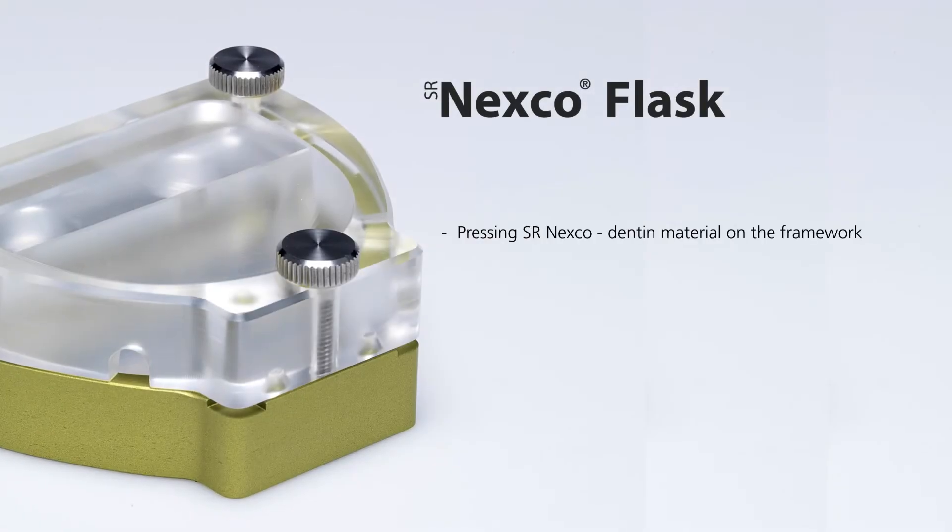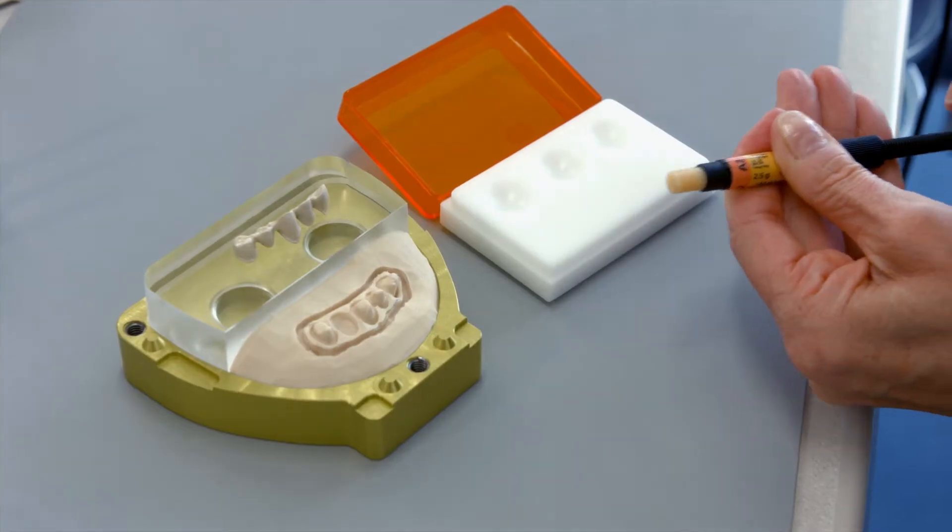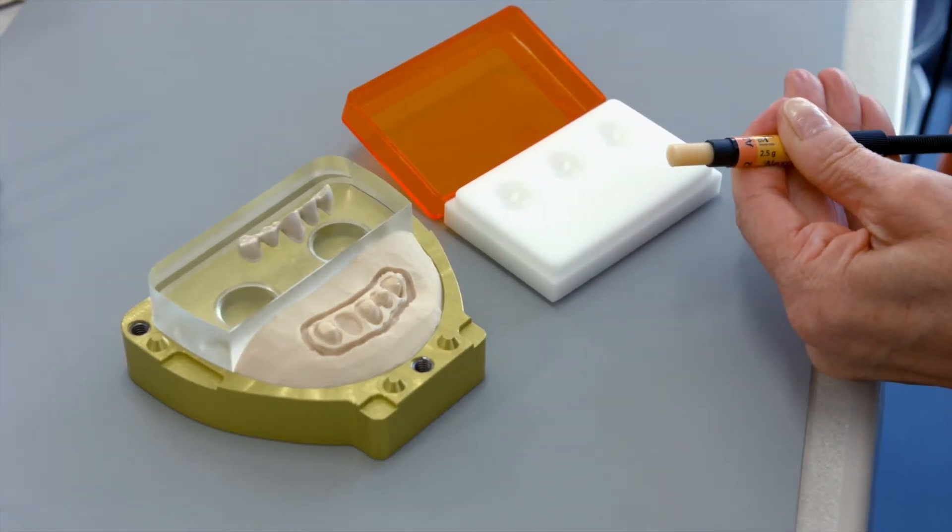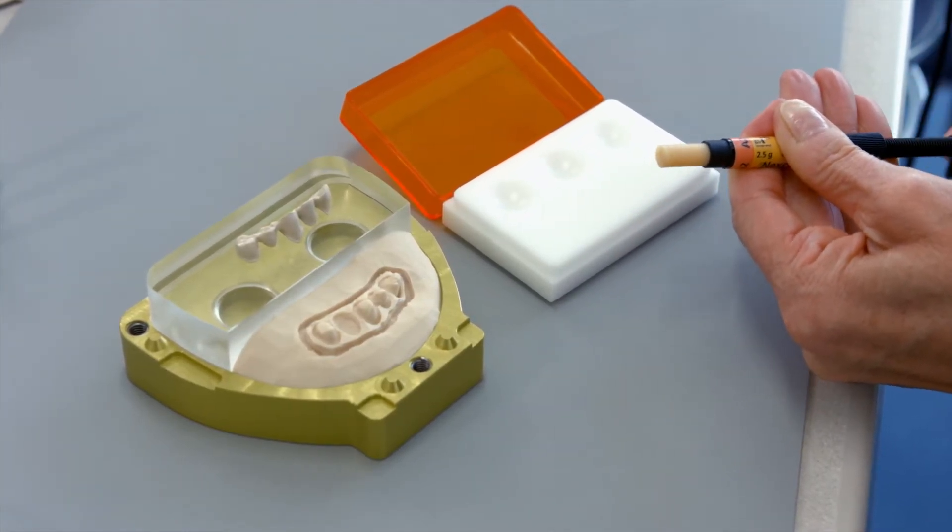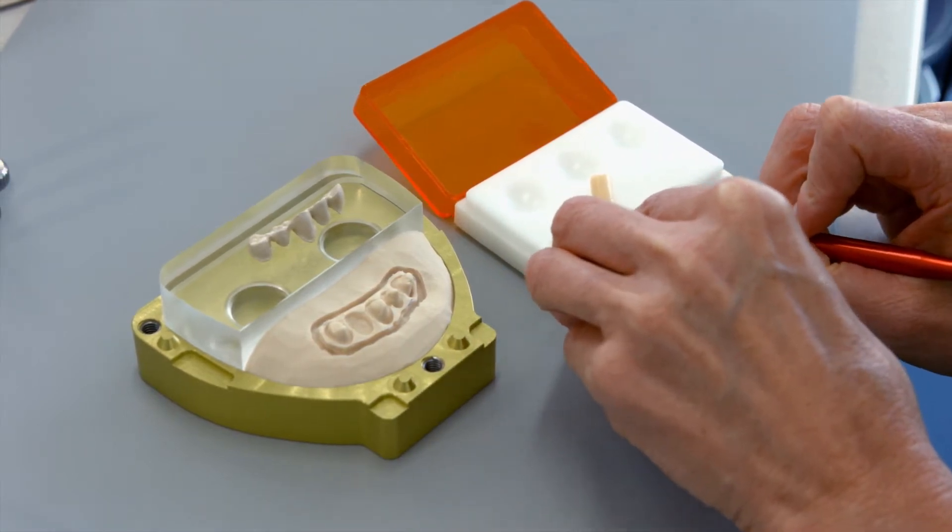Part 4. Pressing SR-NEXCO Denton Material on the Framework. Spread an adequate amount of Denton material on a clean surface. This will soften the material a little for the subsequent working steps.